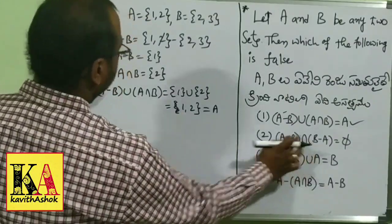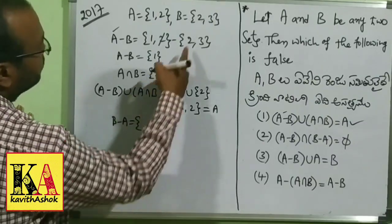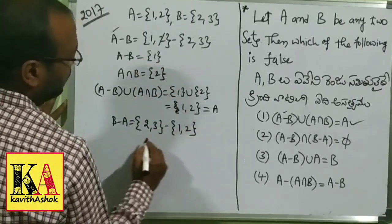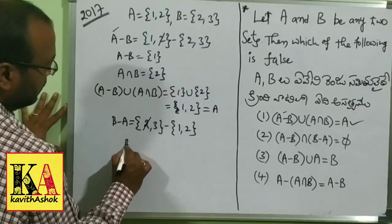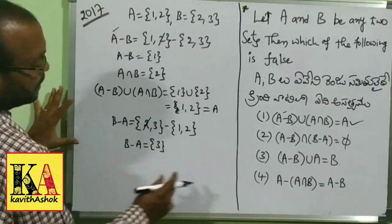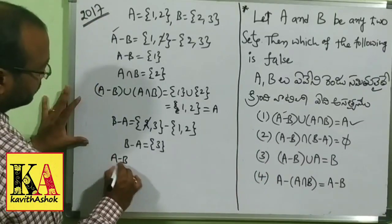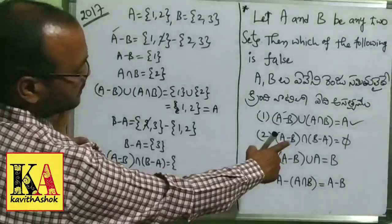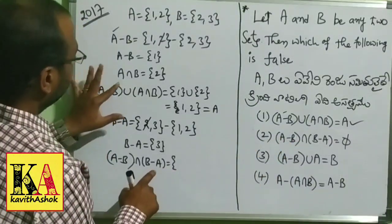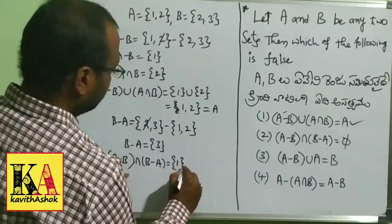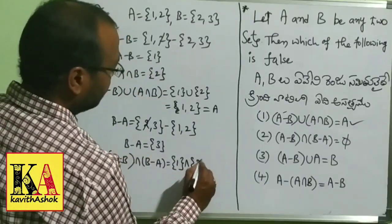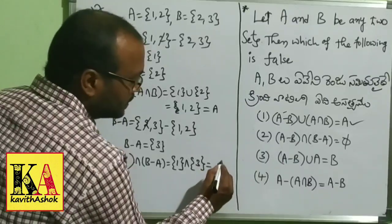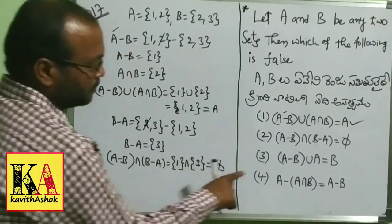A−B we have already. Now find B−A. B = {2,3}, A = {1,2}, so B−A = {3}. Now check (A−B) ∩ (B−A): A−B = {1}, B−A = {3}. There are no common elements between {1} and {3}, so (A−B) ∩ (B−A) = ∅.